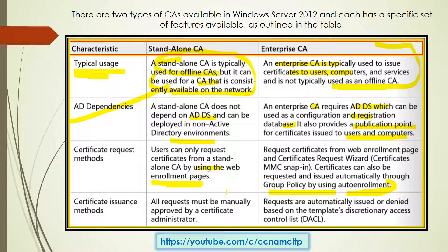Next is certificate issuance method. For standalone, all requests must be manually approved by the certificate administrator — whoever is managing that server has to approve all the requests. For enterprise certificate authority, requests are automatically issued or denied based on templates. We configure templates, and they take care of whether to deny or allow, using a discretionary access control list (DACL) to define permissions.